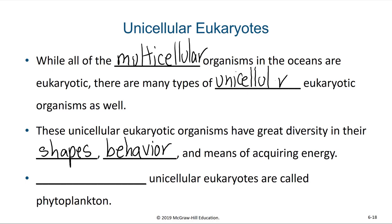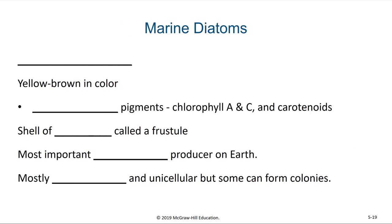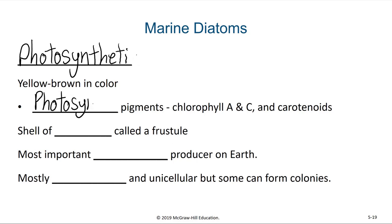Photosynthetic unicellular eukaryotes are called phytoplankton. One type of phytoplankton that we are going to discuss are the diatoms. As mentioned, they are photosynthetic and they're a yellowish-brownish color. When we look at their photosynthetic pigments, we see that they have chlorophylls A and C and carotenoids. Most land plants have chlorophylls A and B. These diatoms have a shell made out of silica, and that shell is called a frustule.